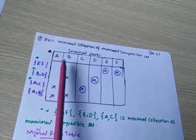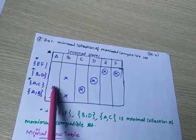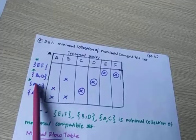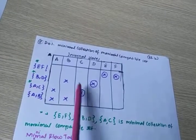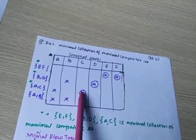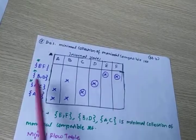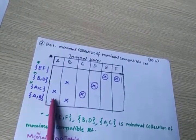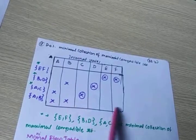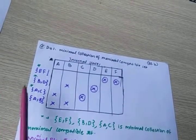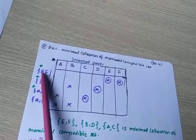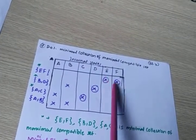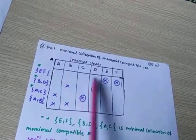For the {A,C} column, A is found so put a cross mark; C is found so put a cross mark. The remaining states E, F are not present so no cross mark there. For the {A,B} column, A is there and B is there. The E,F set is not present in that column. Each and every set is checked — wherever {E,F} appears, put a cross mark in the E,F column; no need to write anything else.